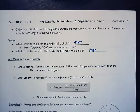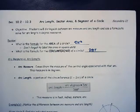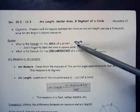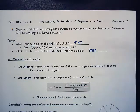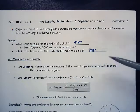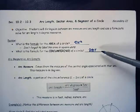Sections 10.2 to 10.3 cover arc length, sector area, and segment of a circle. Students will distinguish between arc measure and arc length and use a formula to solve for arc length in degree measures. First, let's review: the formula for the area of a circle is pi times the radius squared, labeled in square units. The formula for circumference is 2 pi r.